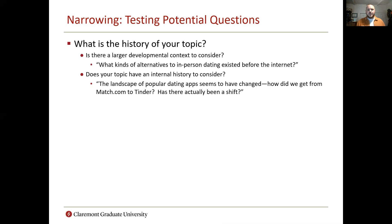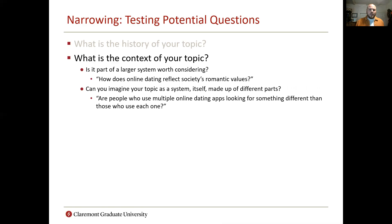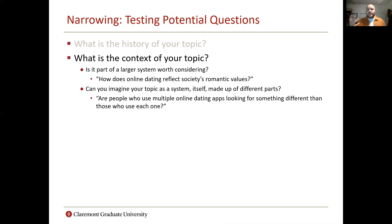Does the topic have an internal history to consider? So, how do we get from earlier online dating sites to later ones? Is there a context for your topic — is it part of a larger system that's worth considering? For example, how does online dating reflect today's romantic values? Can you imagine your topic as a system itself — thinking of these different online dating sites as parts that interact with users who are oftentimes using multiple or just single versions of them?